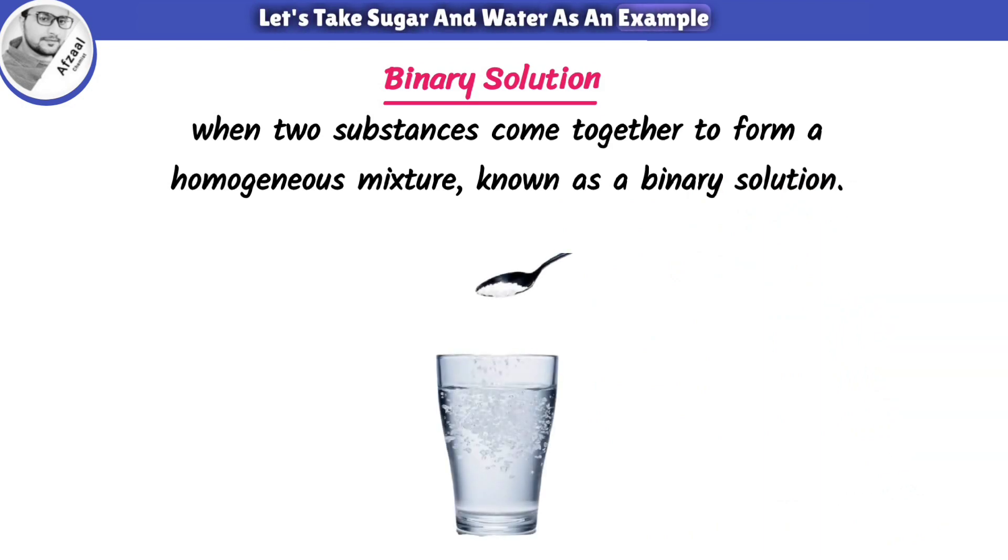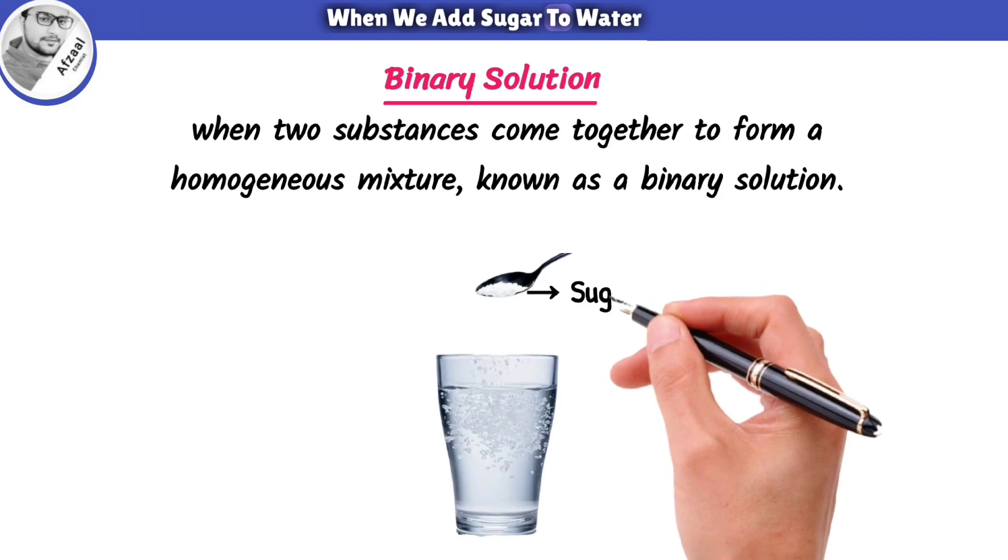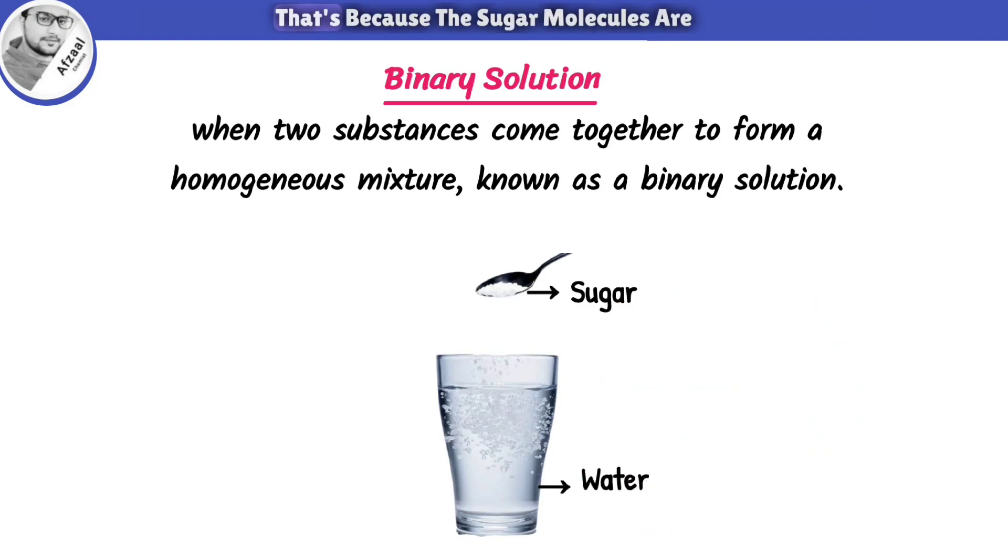Let's take sugar and water as an example. When we add sugar to water, it starts to disappear. That's because the sugar molecules are breaking apart and spreading out evenly throughout the water. This process is called dissolution, and the solution formed is known as binary solution.